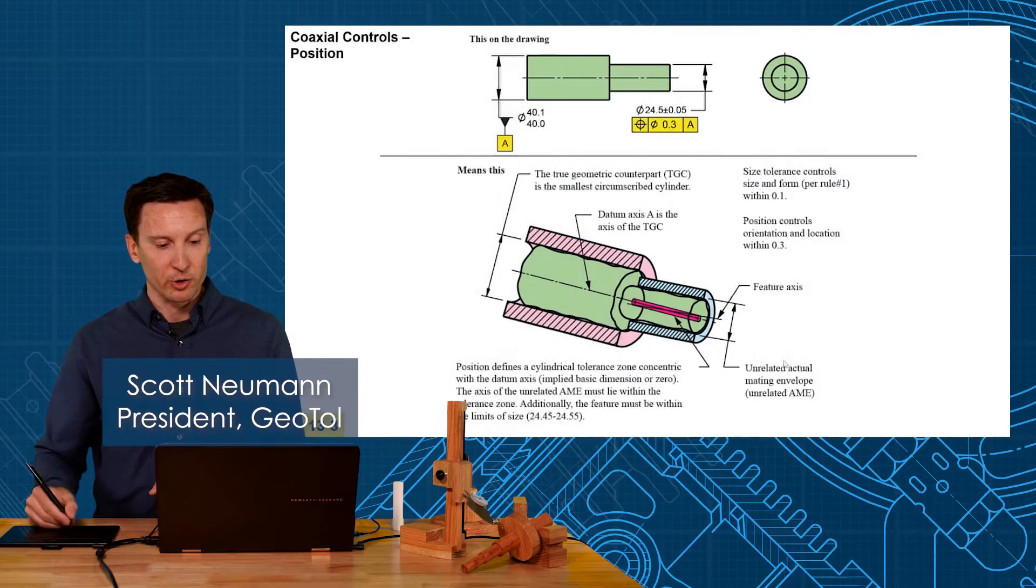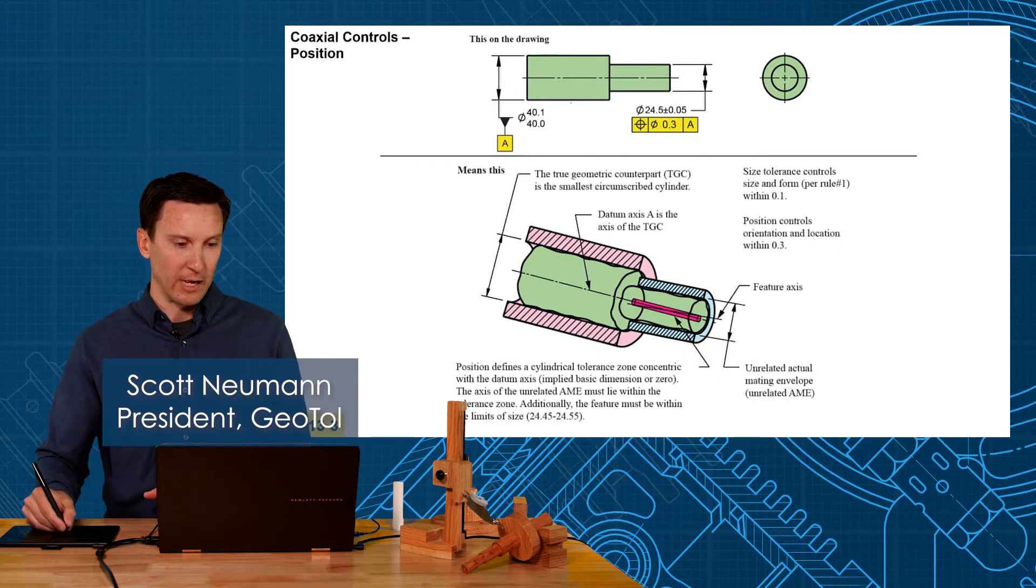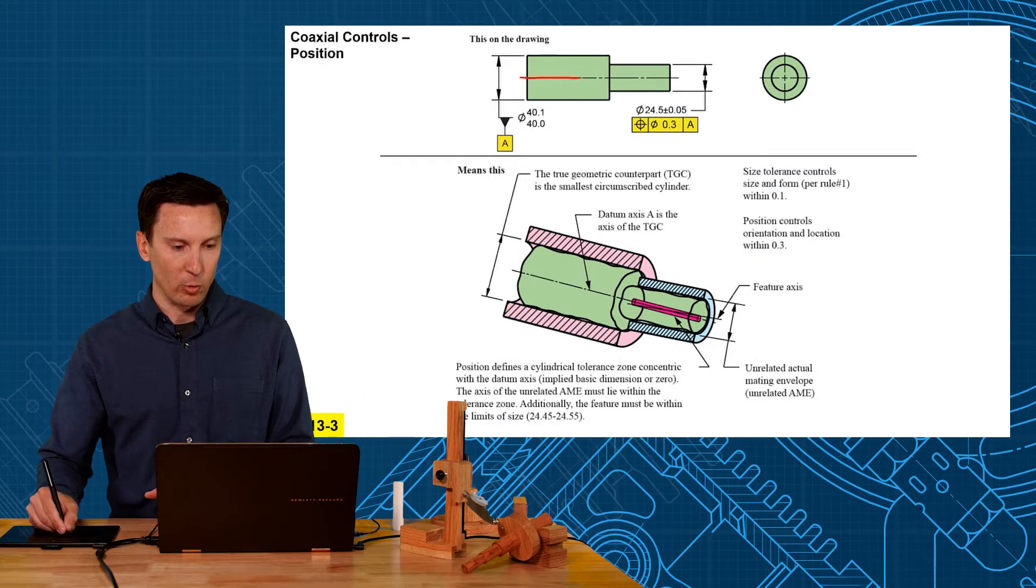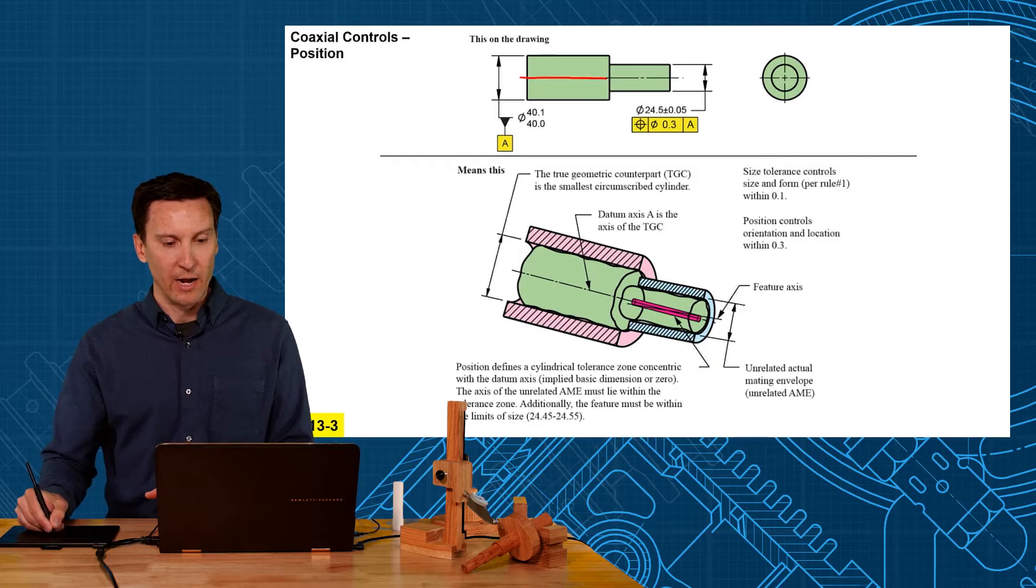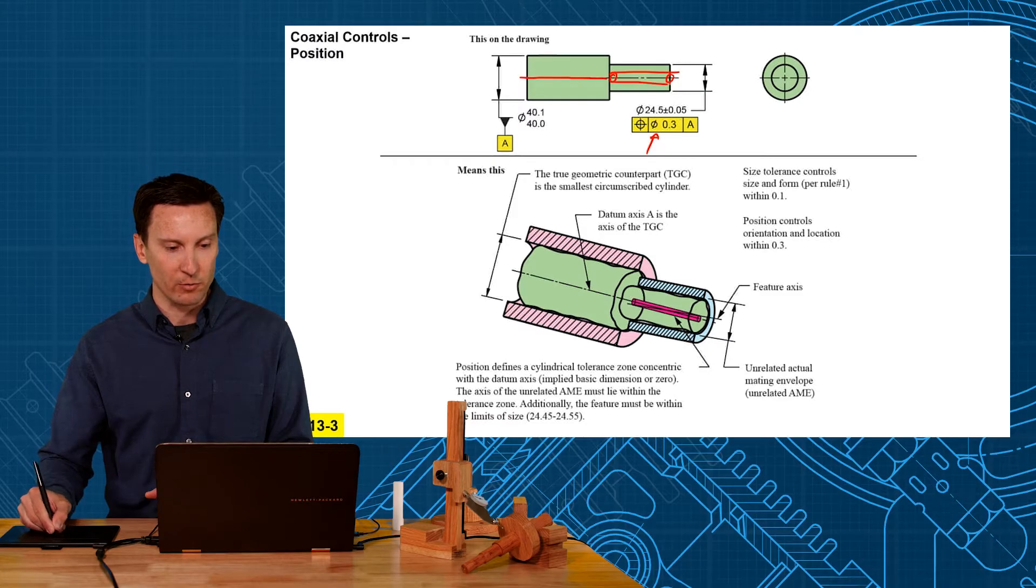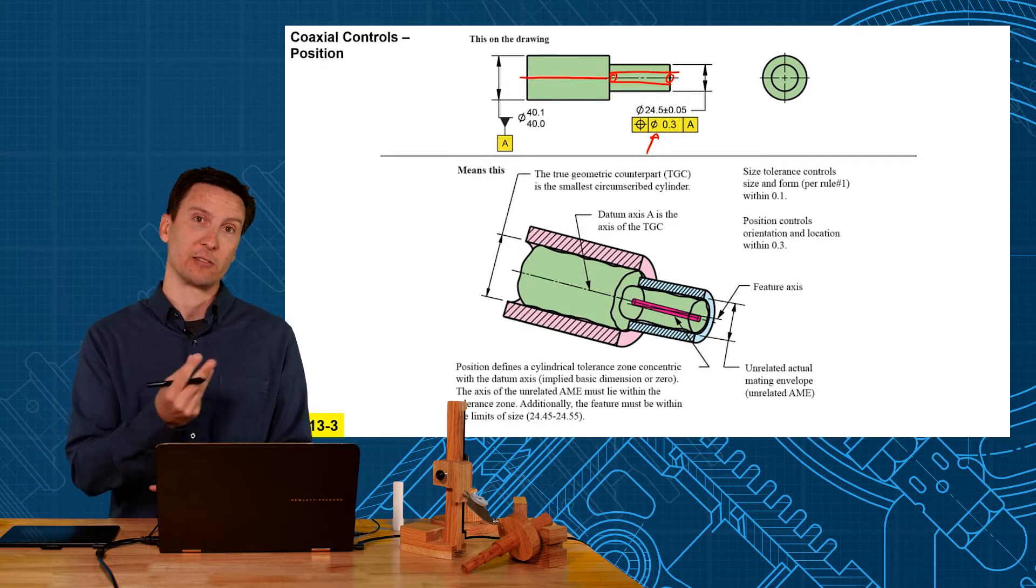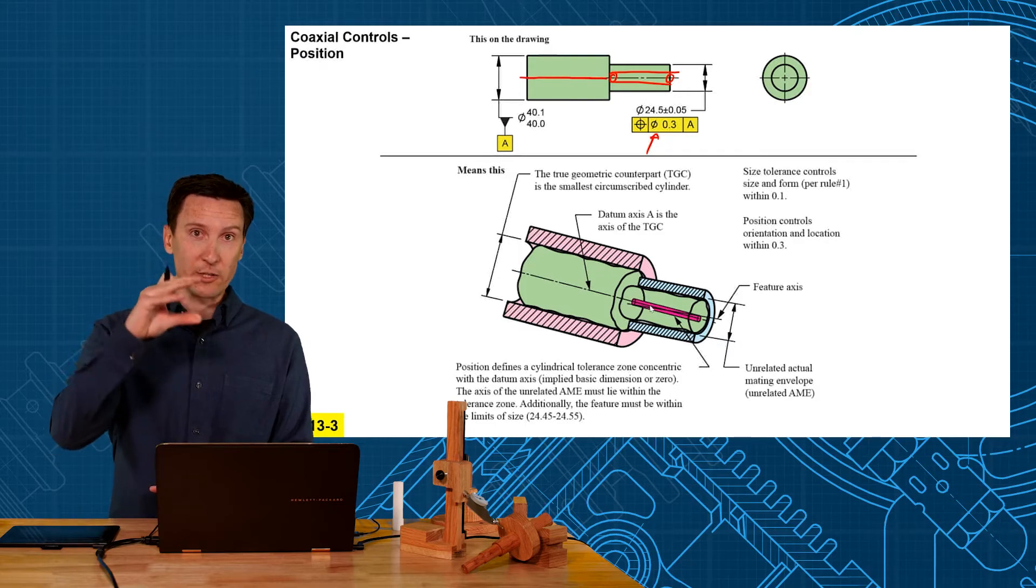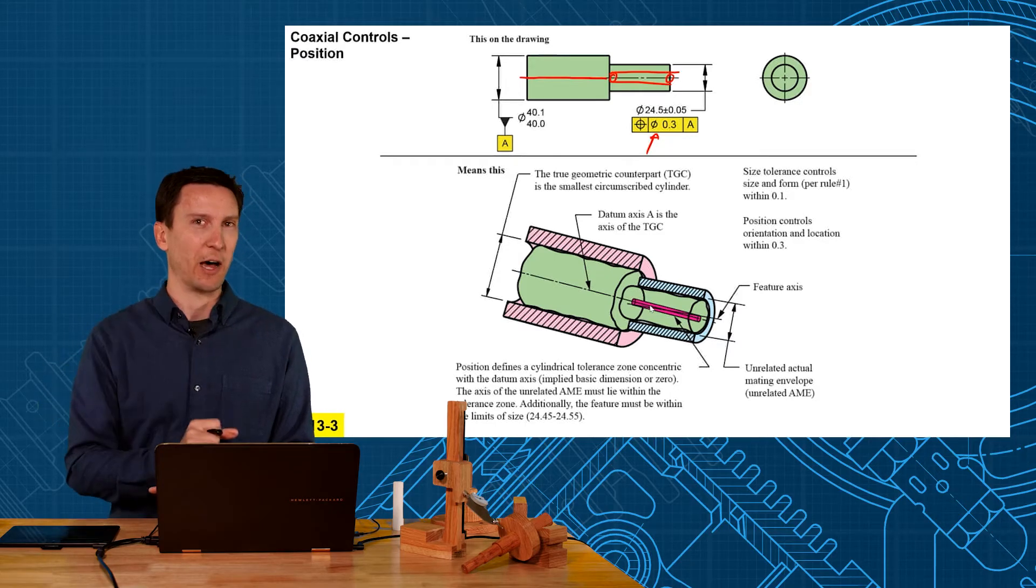In the book I have pictures here showing this more 3D view of what's happening. The larger diameter establishes the datum axis and then position tolerance is controlling the other features axis. You're creating a cylindrical tolerance zone in which the axis of the high points has to lie within. Controls location and orientation but not form.